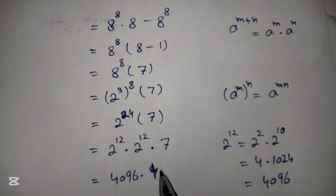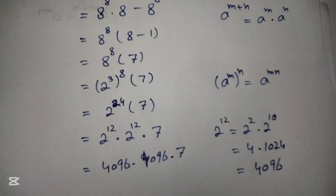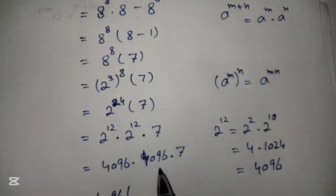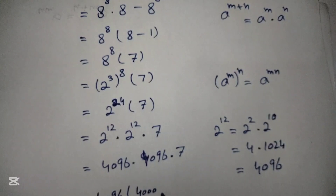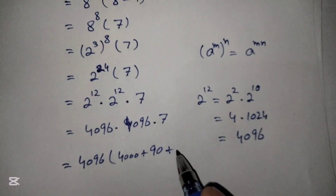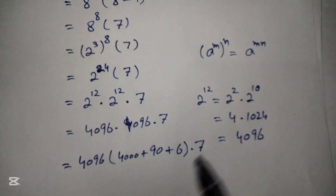We now put this value into our equation as 4096 into 4096 into 4096 into 7. To simplify this, we rewrite 4096 as 4000 plus 90 plus 6, so the expression becomes 4096 into 4096 into (4000 plus 90 plus 6) into 7.